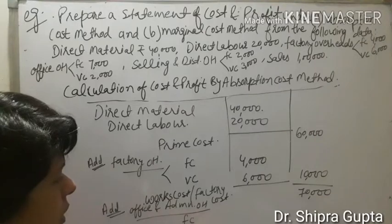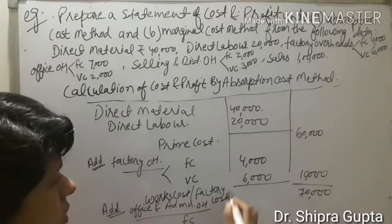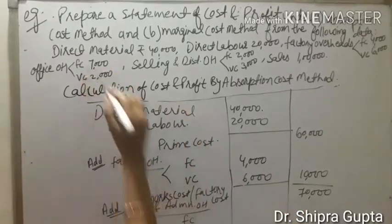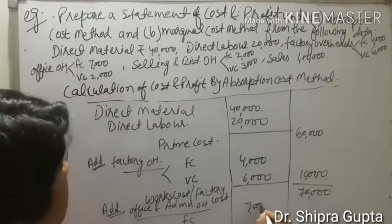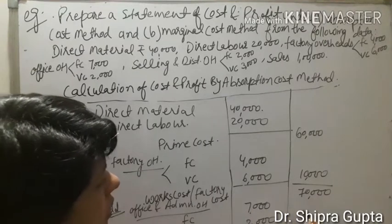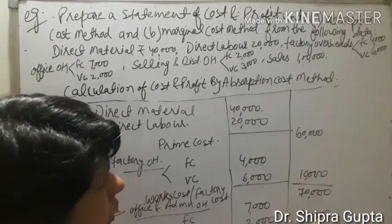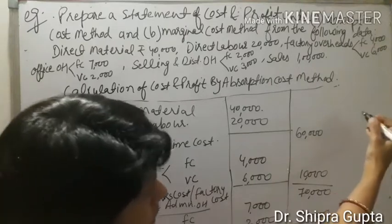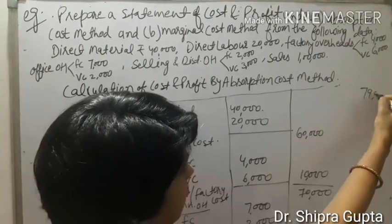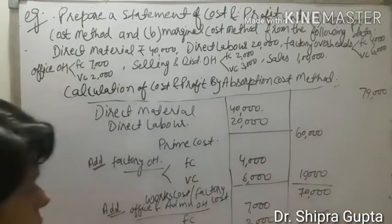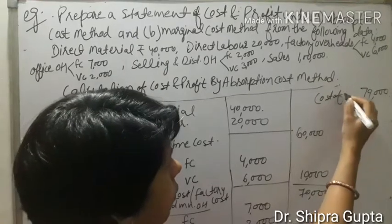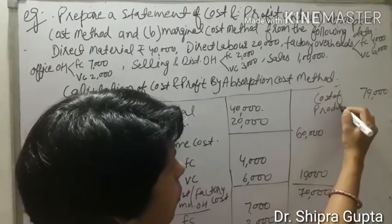Then we add office and administration overheads, again divided into fixed cost and variable cost. Fixed cost is Rs. 7,000 and variable cost is Rs. 2,000, making a total of Rs. 9,000. Adding this to works cost gives a total of Rs. 79,000, and this is known as cost of production.